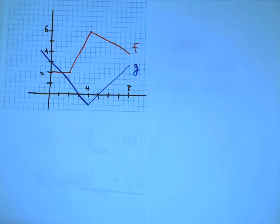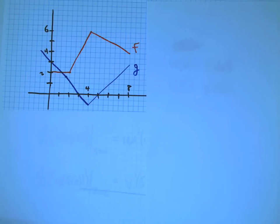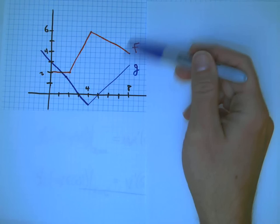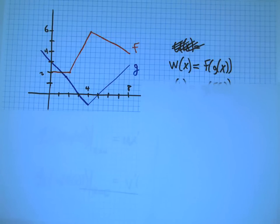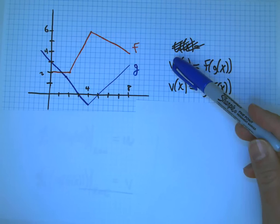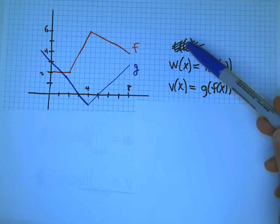And I want to use the chain rule ideas to analyze this. So the way the book would say it is let's define a function, let's say w. I don't want to use u because I like using u as the intermediate variable, like the output of the inside function. So let's say w(x) is f(g(x)), and v(x) is g(f(x)).